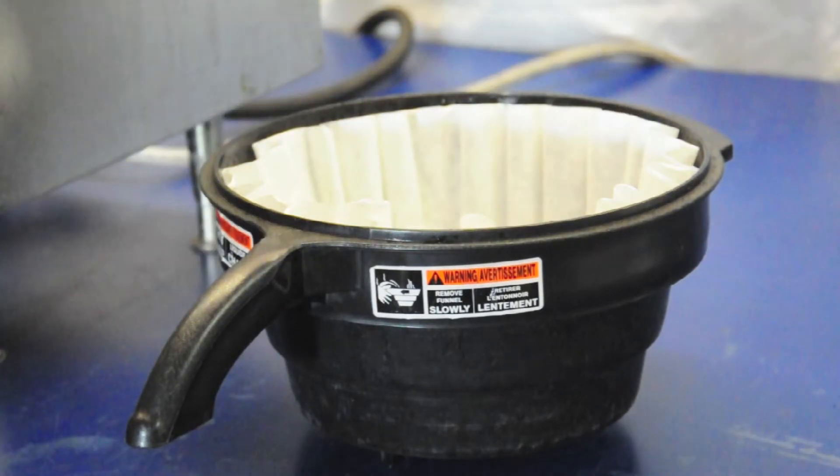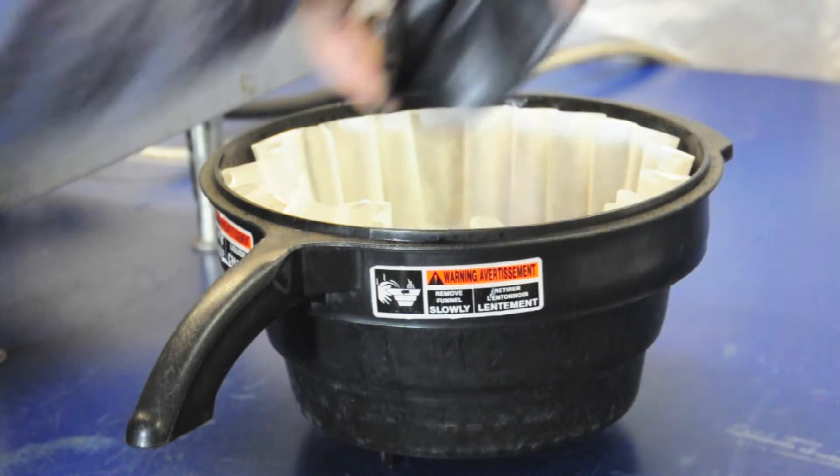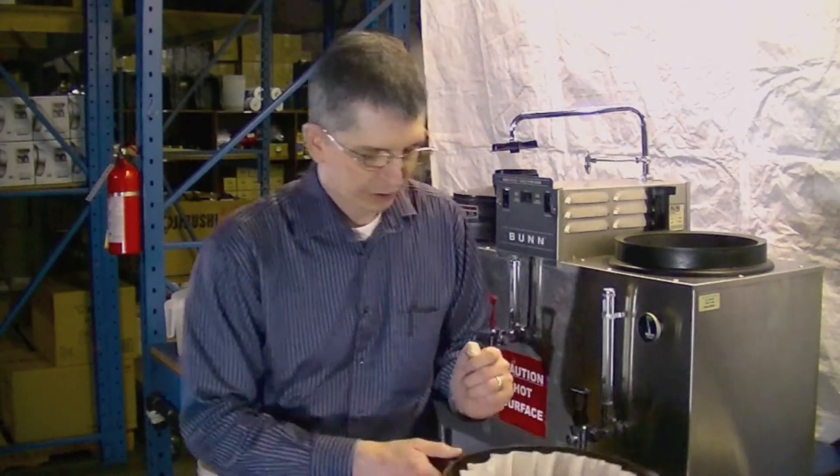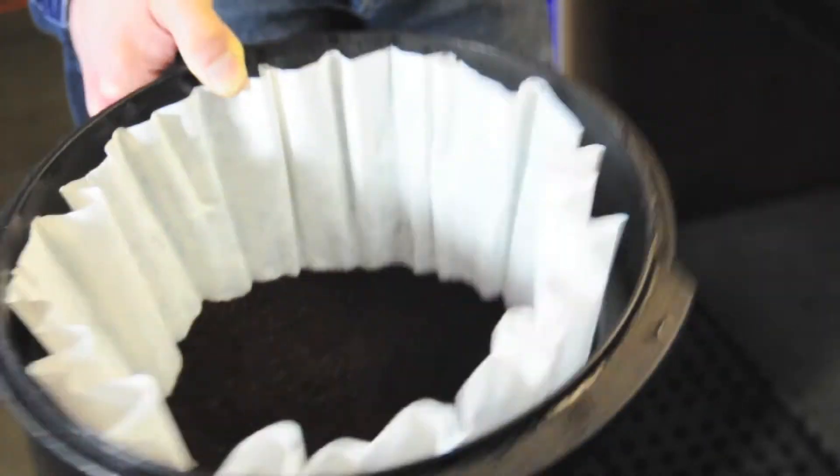Take one 12 ounce portion of ground Canterbury coffee, pour it evenly into the bottom of the filter. Make sure that you level the bed of coffee in the bottom of the filter so you get good extraction.